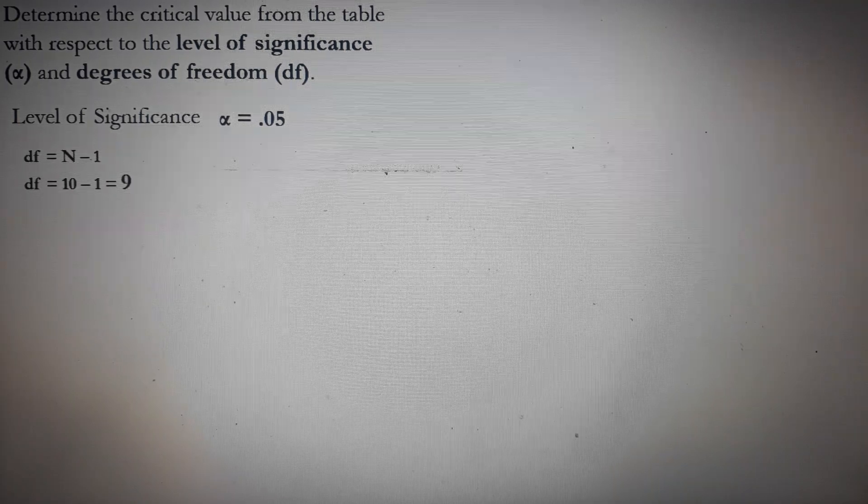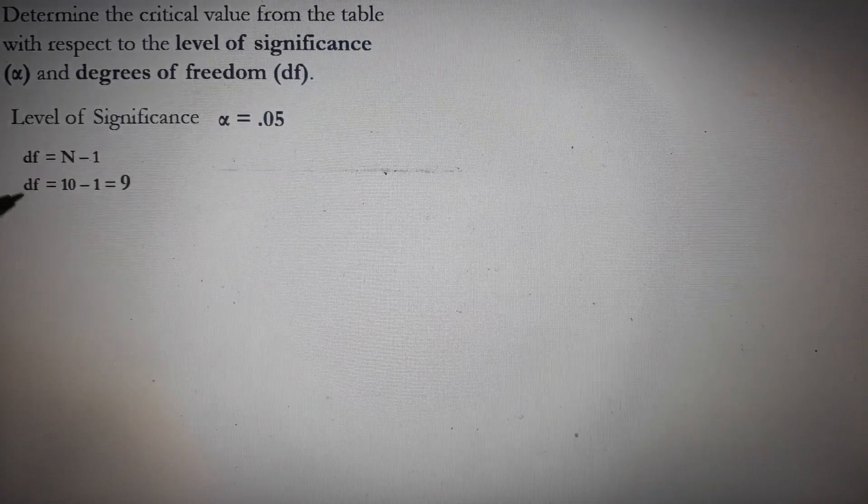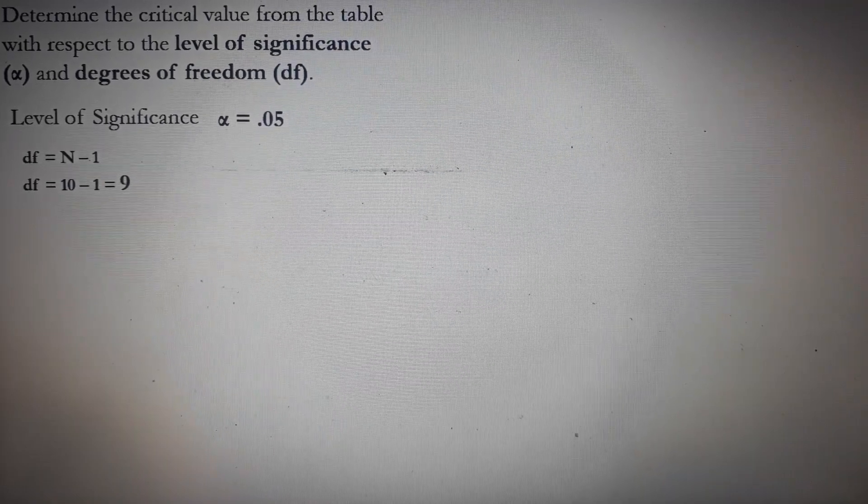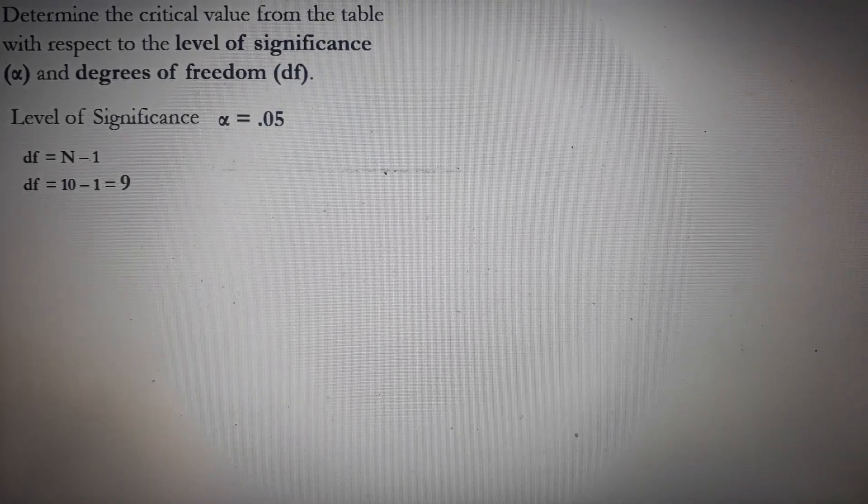Next, we have to determine the critical value from the table with respect to the level of significance and degrees of freedom. Normally, the level of significance or the alpha is 0.05. The degrees of freedom now is N minus 1, which is 10 minus 1, which is equal to 9.